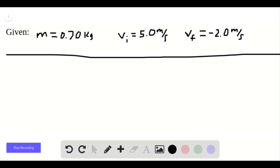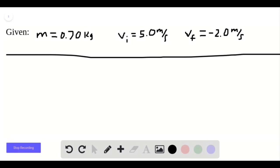It then strikes a wall and rebounds in the opposite direction at 2 meters per second. So the final velocity is negative 2 meters per second, because it's moving in the opposite direction of the initial velocity. And it wants us to find the magnitude of the change in its linear momentum.